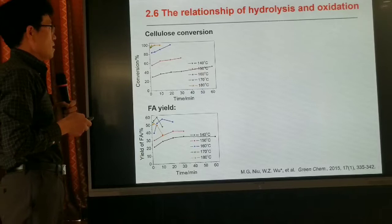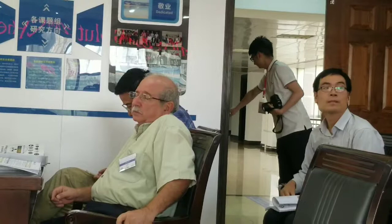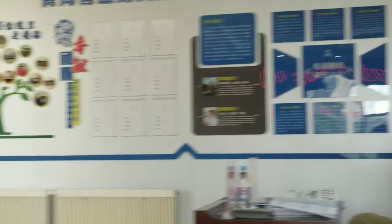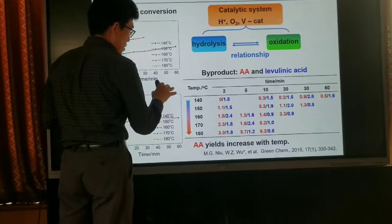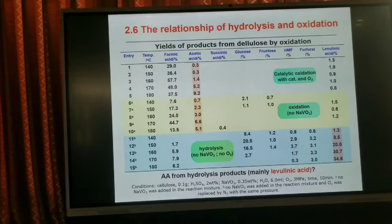We investigated the relationship between hydrolysis and oxidation. The conversion of acetic acid in the catalyst reaction system shows that increasing temperature and changing time greatly affects conversion, and formic acid yield is related to temperature and reaction time. We think there is a competitive relationship between hydrolysis and oxidation. We found that in acidic conditions, increasing temperature gives a small amount of acetic acid and a small amount of levulinic acid, suggesting competition between hydrolysis and oxidation pathways.